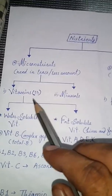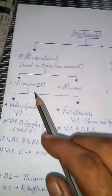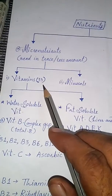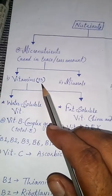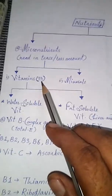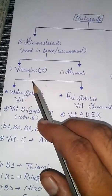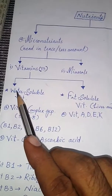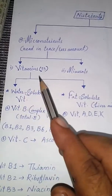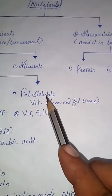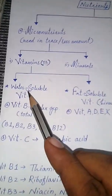So let's see the details of vitamins. The vitamins we need are about 13 different types. These 13 different types are further divided into two types: type number one, water soluble vitamin, and type number two, fat soluble vitamin.